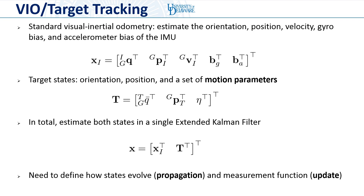In total, we seek to gain the highest accuracy possible by formulating a single joint estimation problem which seeks to estimate the IMU states and the target states given all measurements collected. In this work, we use a single extended Kalman filter to do this. In order to use an EKF, we need to define how the states evolve in time and how our measurements are a function of the state, in order to formulate the EKF propagation and update.